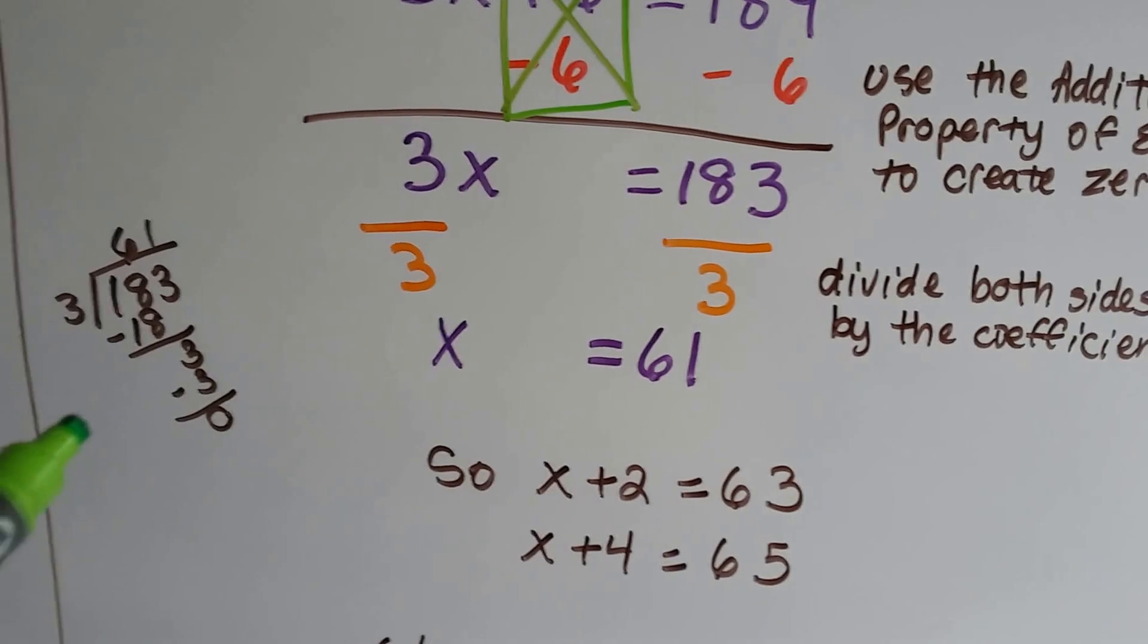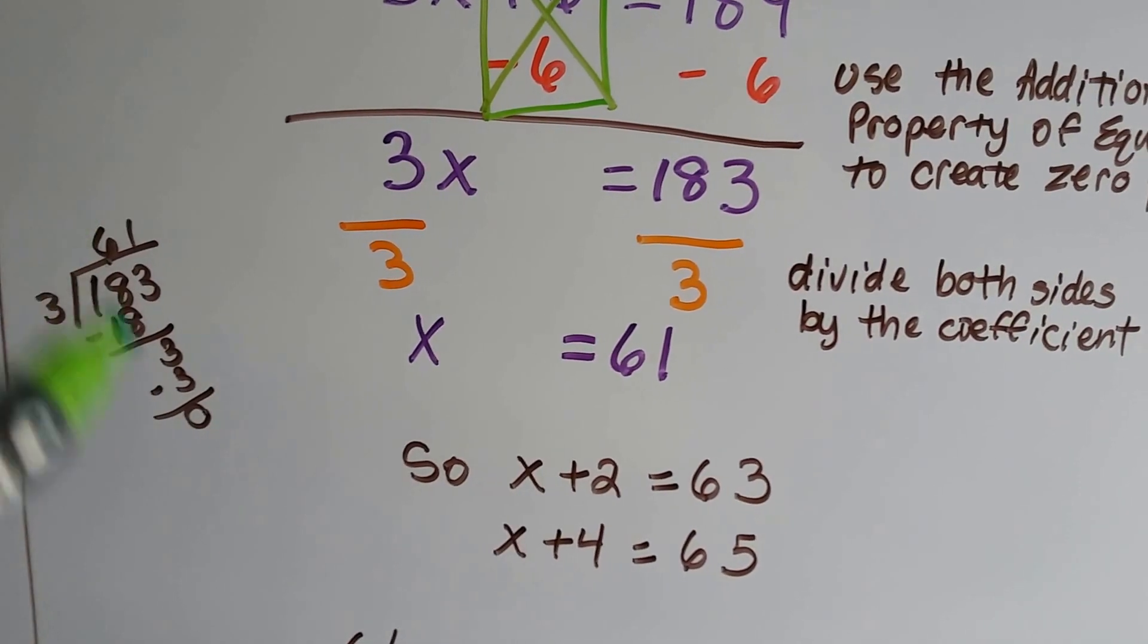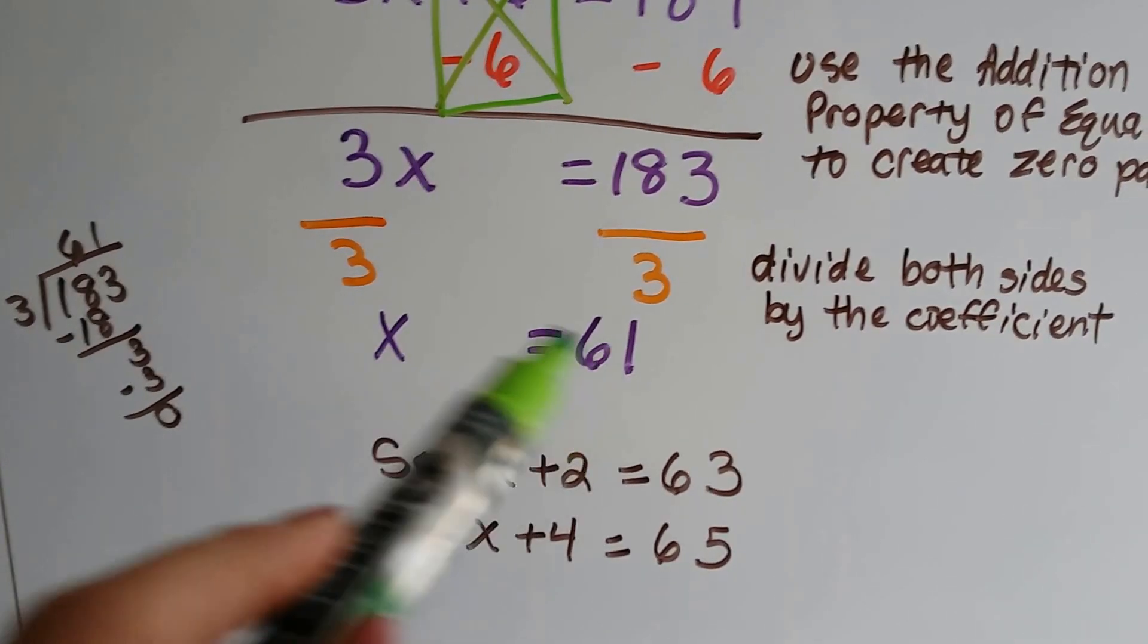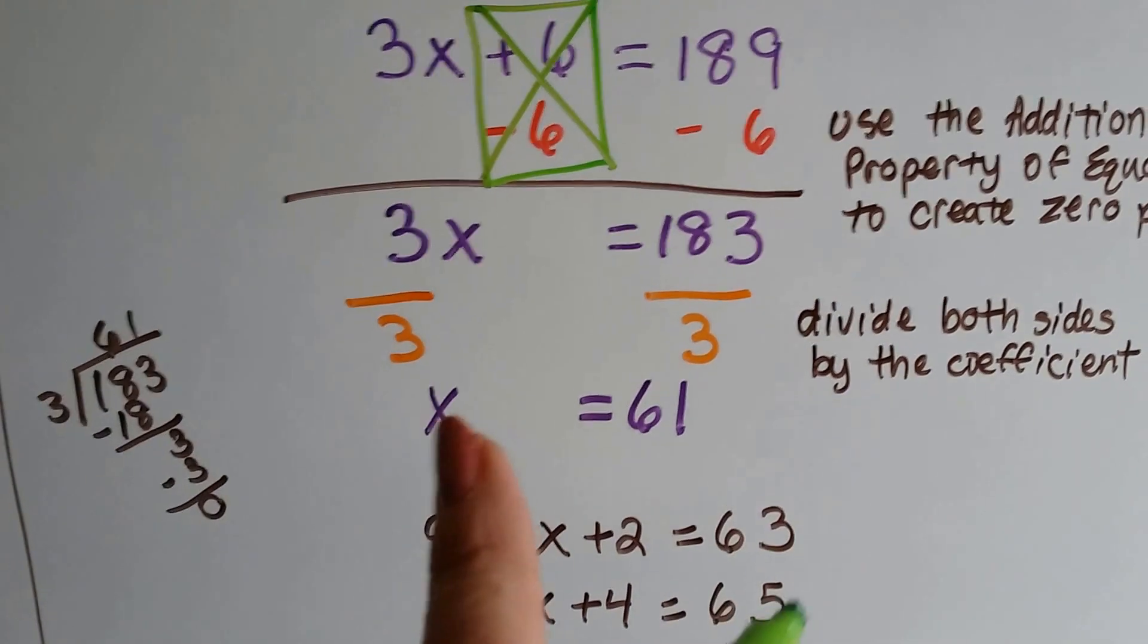And 183 divided by 3, do a little long division, it gets 61. So we know x equals 61. But we're not done.